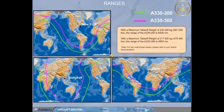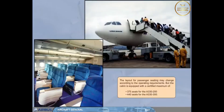With a maximum takeoff weight of 230,000 kg, the range of the A330-200 is 6,400 nautical miles. The range of the A330-300 is 4,900 nautical miles. Note: for customized values, please refer to your airline documentation. The cabin is equipped with a certified maximum of 375 seats for the A330-200 and 440 seats for the A330-300.